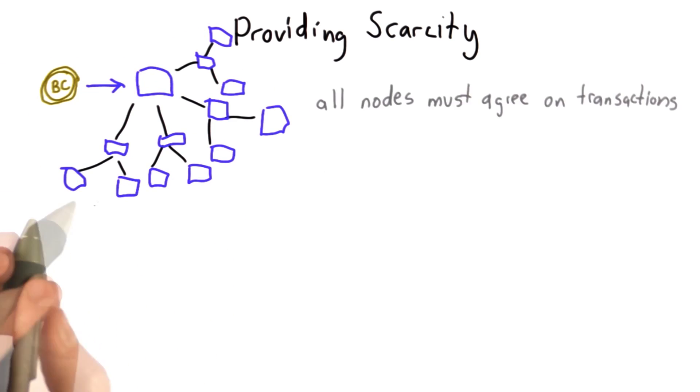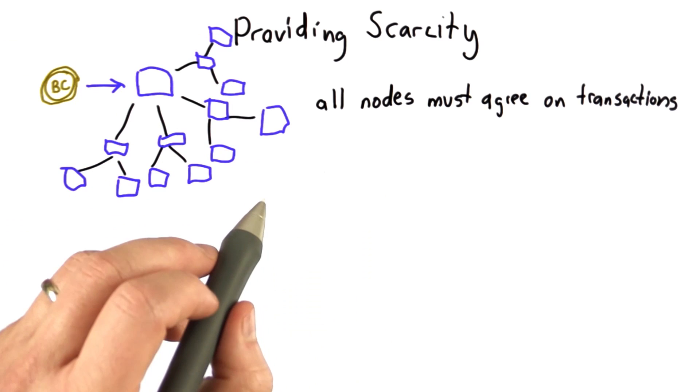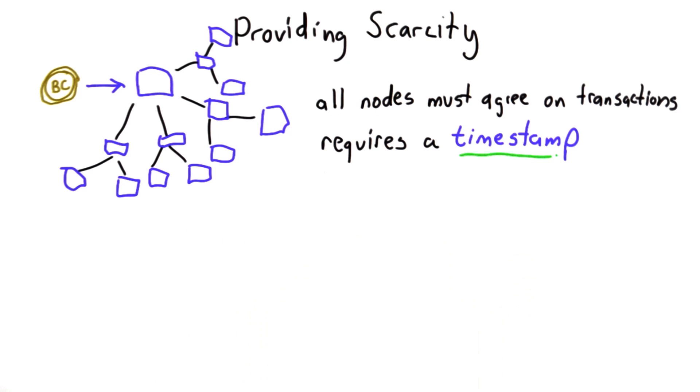There's two important parts to this. That means all the nodes must agree on all the transactions, and that requires some sort of timestamp. Nodes are going to receive messages at different times.